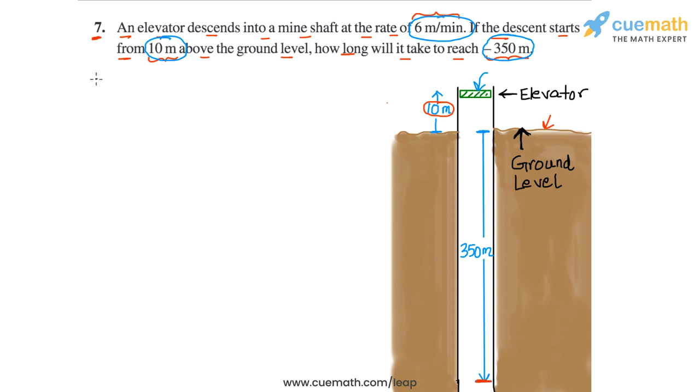So let's write this information. The initial level of the elevator is plus 10 meters. This assumes that the ground level is the zero level. What is the final level of the elevator?